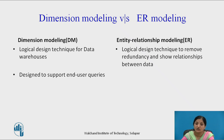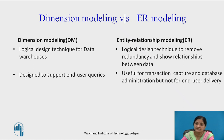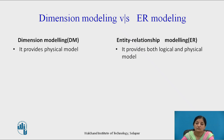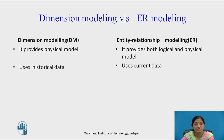Dimensional modeling is designed to support end user queries, but ER modeling is more useful for capturing transaction data and database administration — it is not favorable for end user queries. Dimensional modeling provides a physical model, while relational modeling provides both logical and physical models. Dimensional modeling uses historical data, whereas ER modeling uses current data.